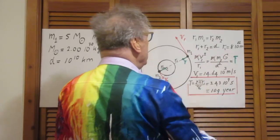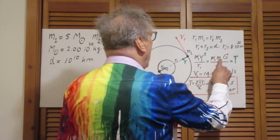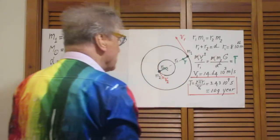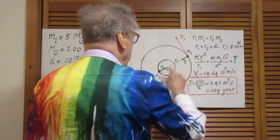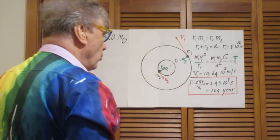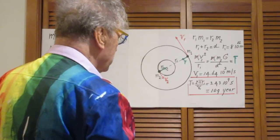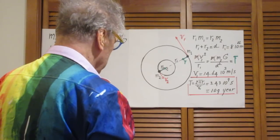So, in this equation we know r1, we know m2, we know d, we know g, so we find that v1, the speed of m1, is 14.64 times 10 to the third meters per second. So, 14.6 kilometers per second.